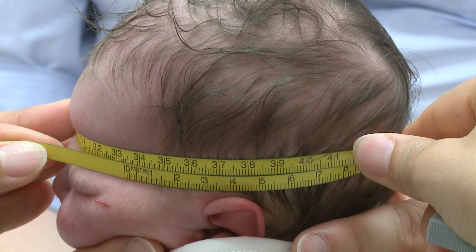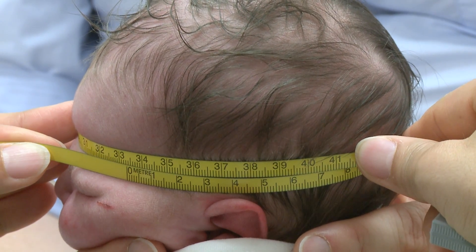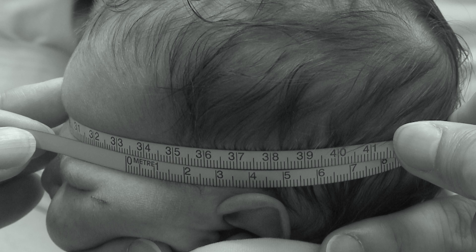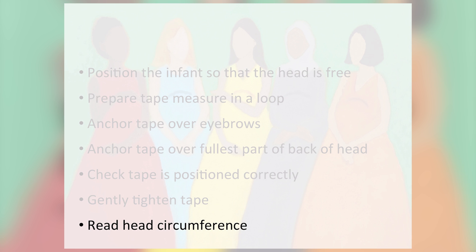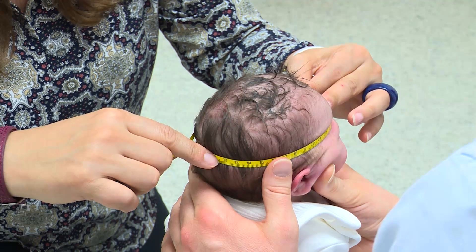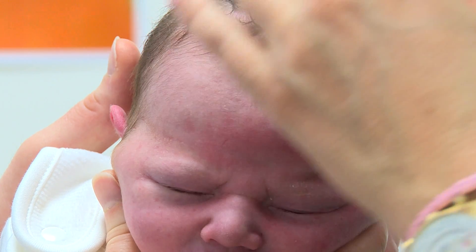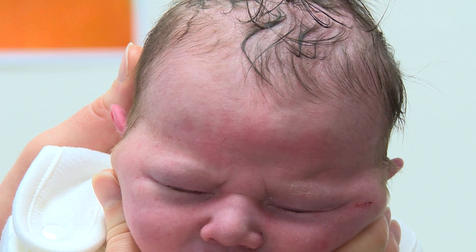The measurer records the measurement to the last completed millimetre. For example, this baby's head shows a measurement slightly in excess of 33.3 centimetres, so the measurement will be 33.3 centimetres. Once completed, the measurer carefully removes the tape off the baby's head. Any residual pressure marks should disappear within seconds.